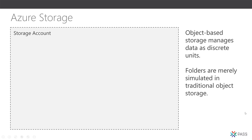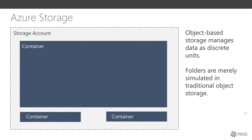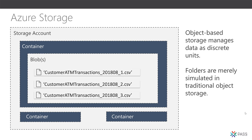Azure Storage is a traditional object store, much like S3 on Amazon. We have the notion of a storage account. Within the account, we have one or more containers, and within the container, we have files or blobs. This is considered flat storage, and if we introduce folders, they are merely simulated for us users.